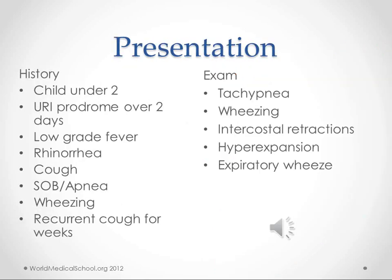The typical story is a child under the age of two who has an upper respiratory infection with runny nose, maybe some cough, and sneezing for a couple of days. Then they develop a low-grade fever — a little bit higher fever if caused by adenovirus — followed by shortness of breath, and sometimes apnea, with around 20% presenting with apnea. Wheezing is really the key feature. Recurrent cough can also happen for a couple of weeks after the infection is already clearing up, similar to what you see with the common cold.